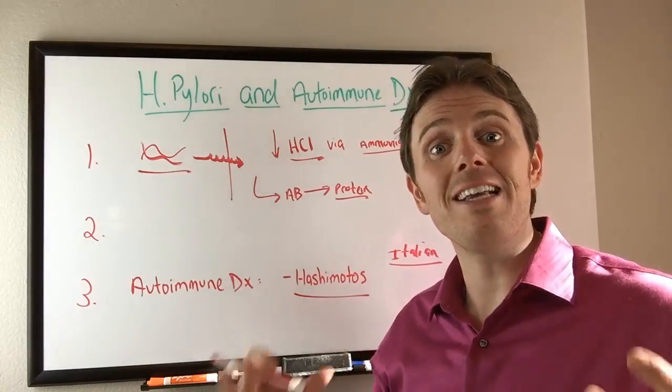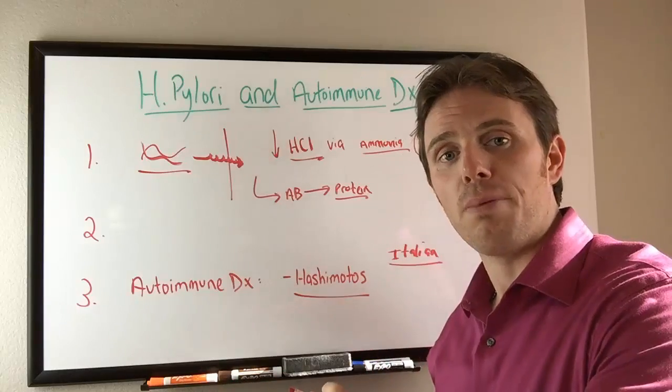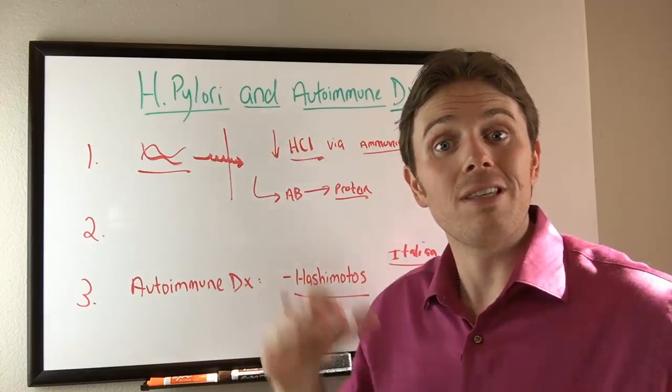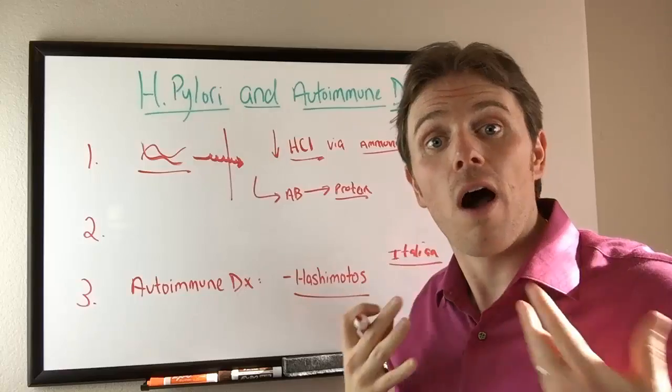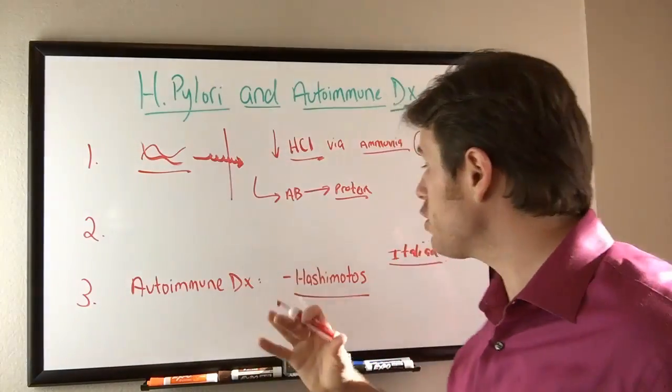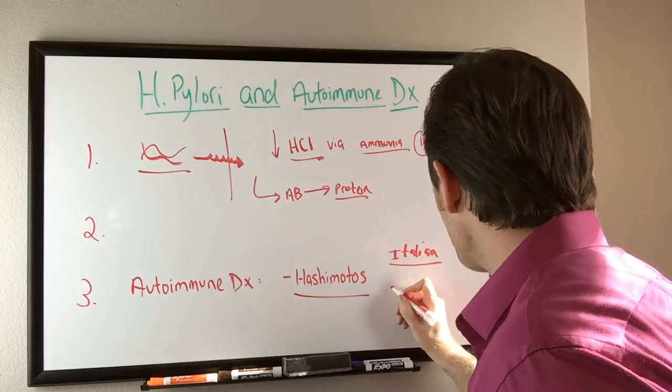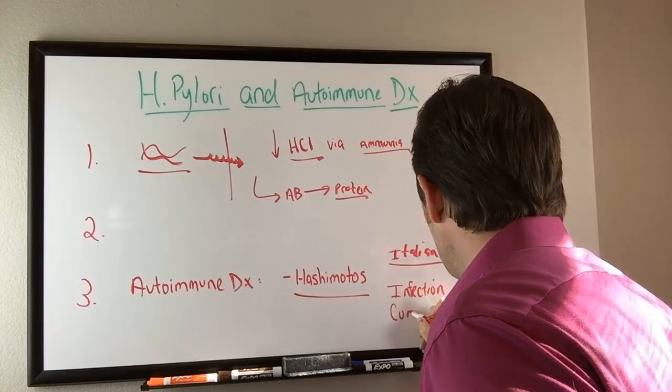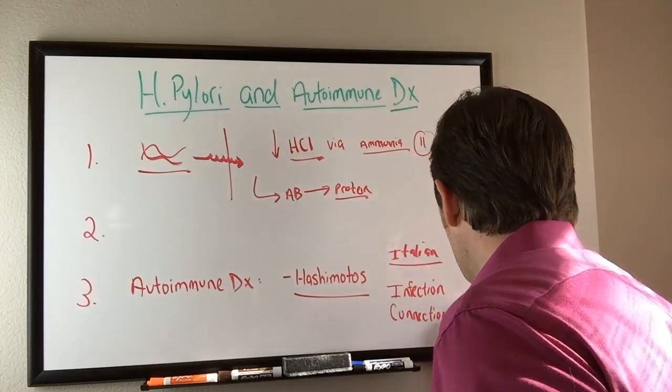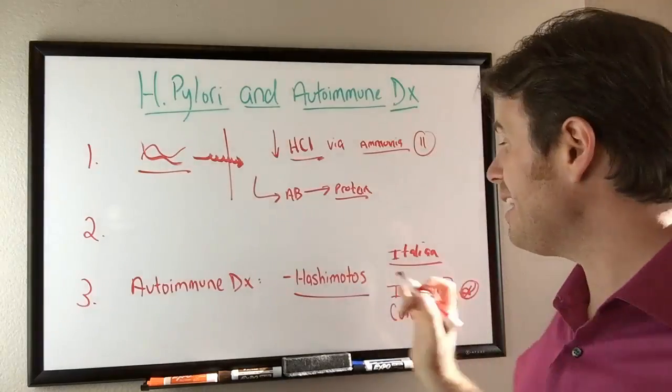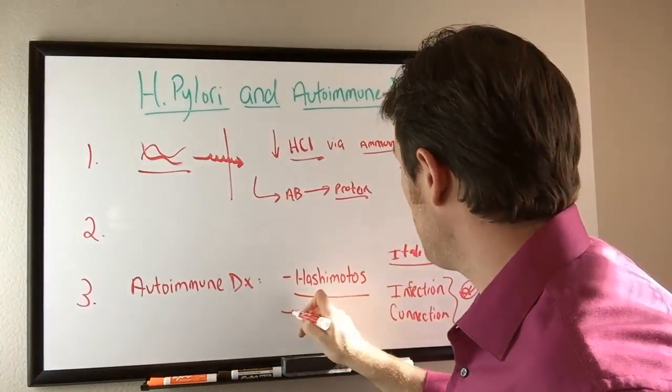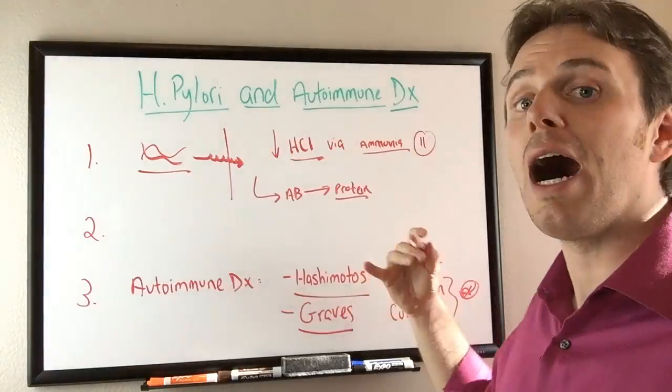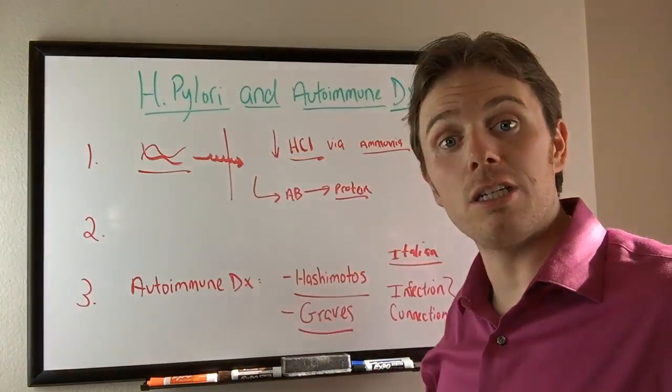Now this is important because 90% of thyroid patients today are actually autoimmune in nature, somewhere between 50 and 90%. So a significant percent of people who are autoimmune have thyroid issues and there's a strong infection connection when it comes to various infections, especially H. pylori and thyroid conditions. We actually even see it in Graves disease as well where we have a high amount of thyroid hormone versus Hashimoto's which is more of a hypo. Graves is hyper, Hashi's is hypo.